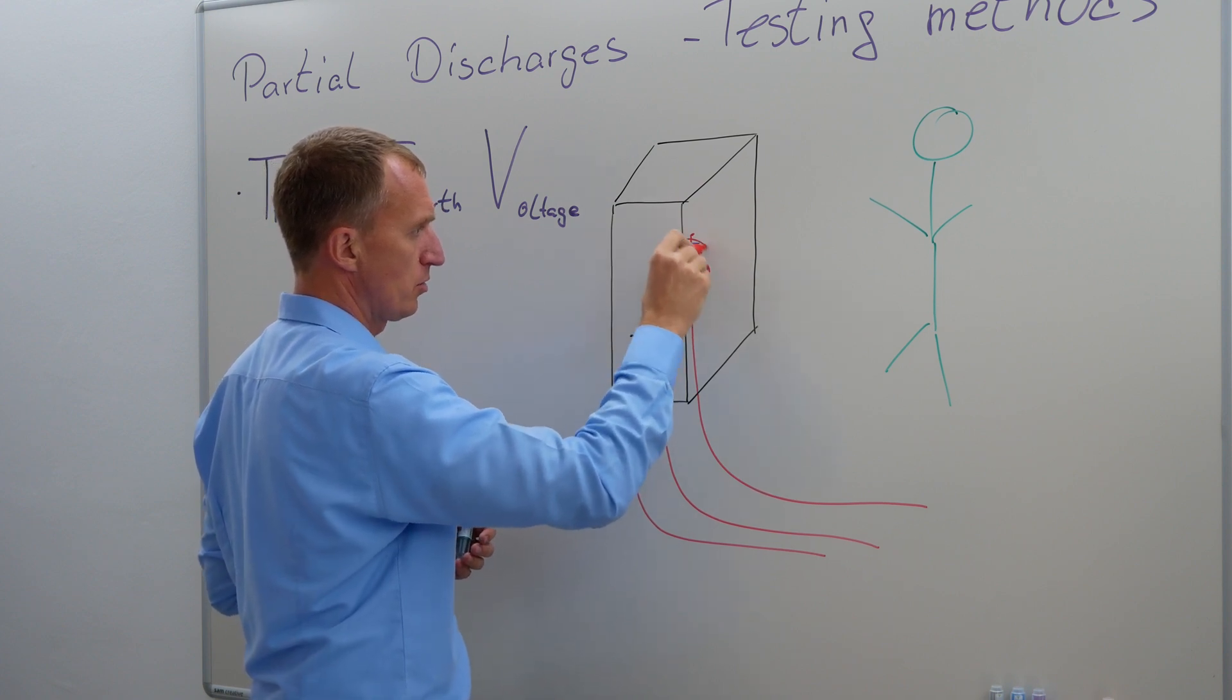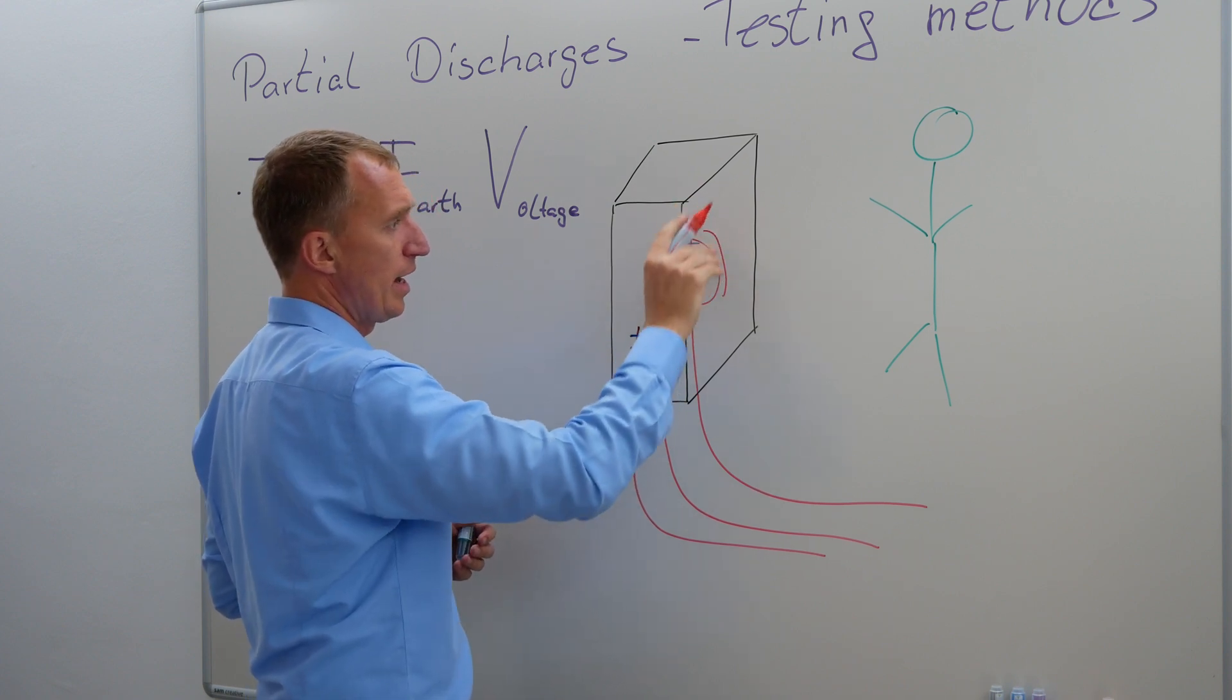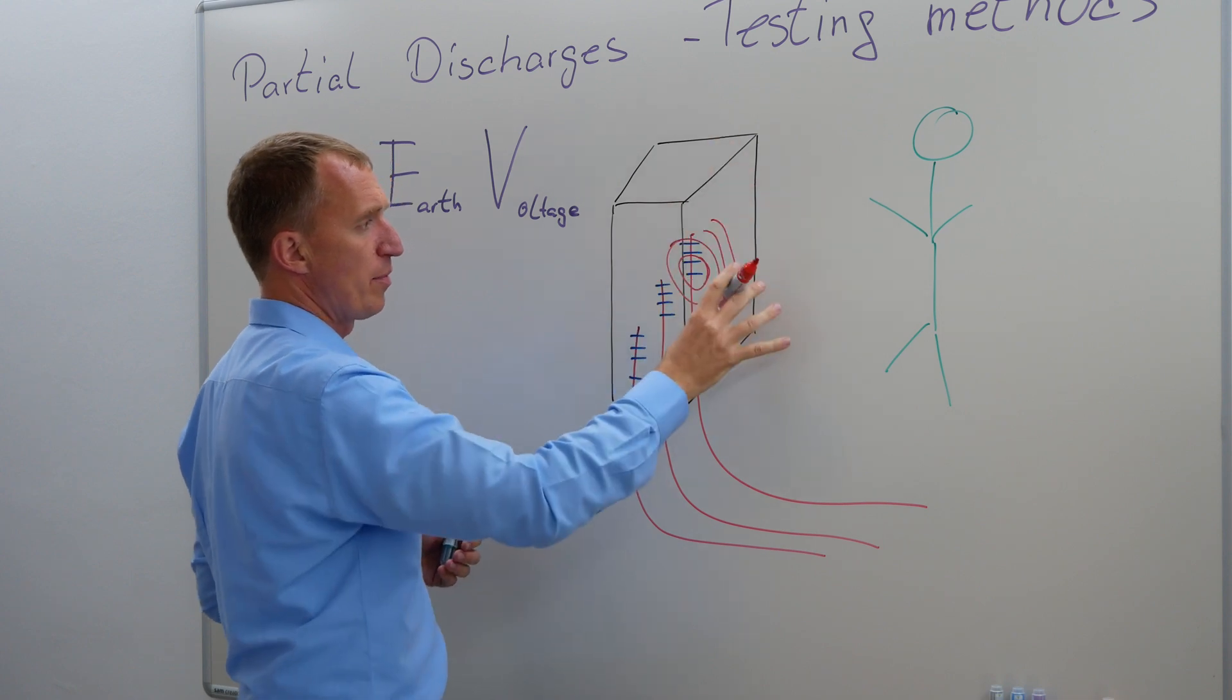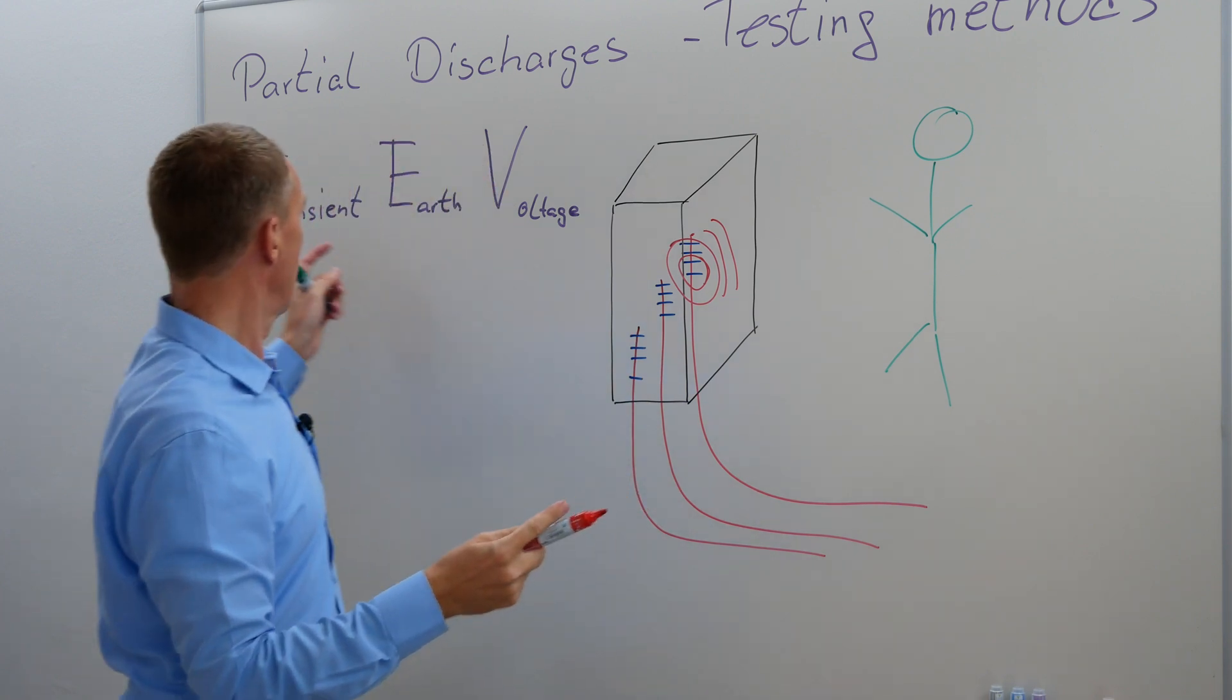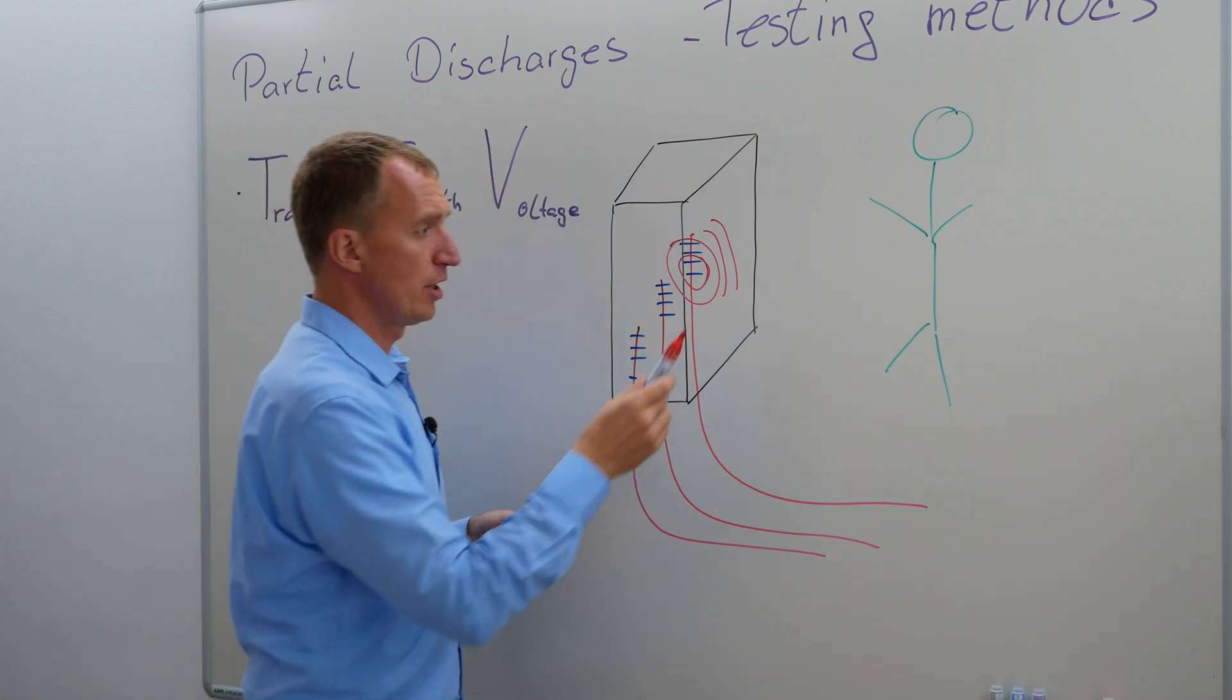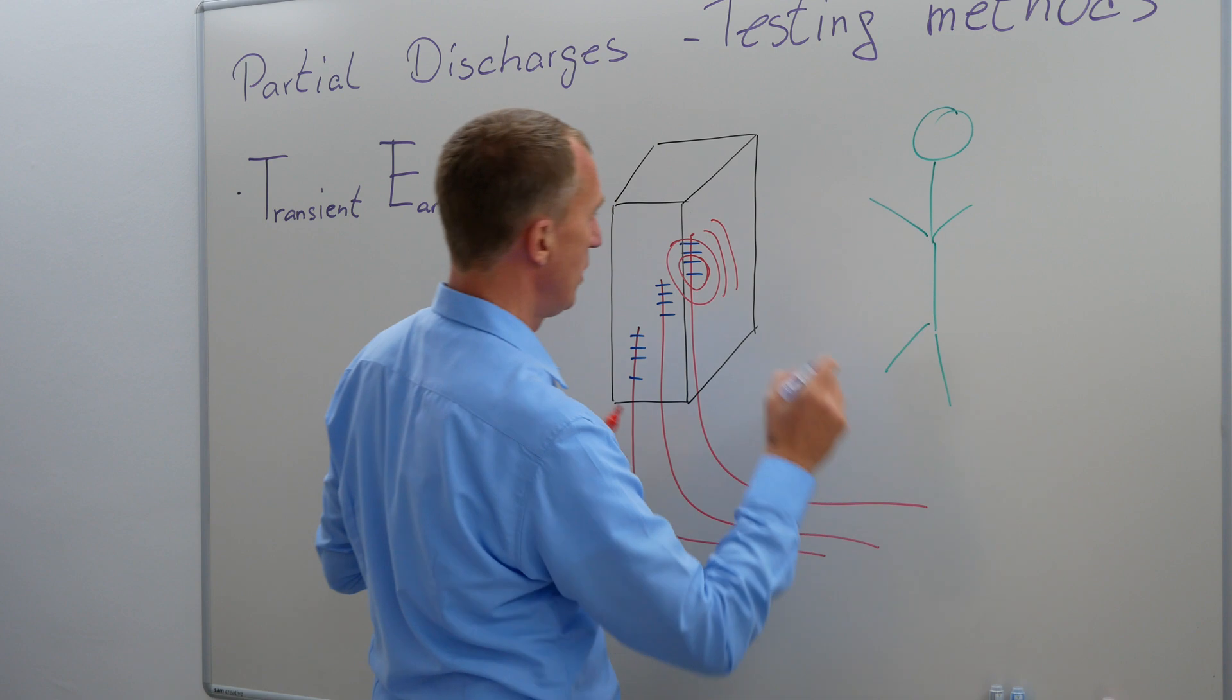Actually, this is round, right? But I'm only caring about this part. Now it hits my metal casing and I will have a small spike, a transient earth voltage, which I could pick up if I have a sensor here. So I could place a sensor here.